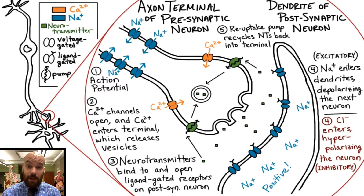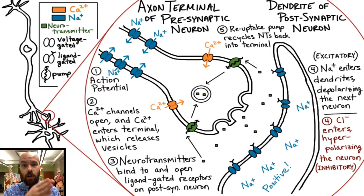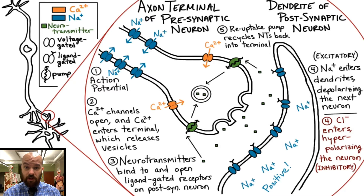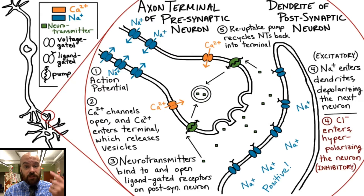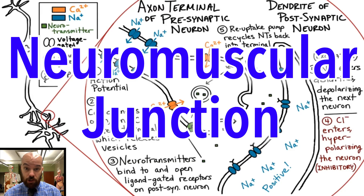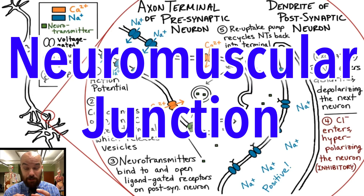Those are the steps of synaptic transmission — the communication of a signal from one neuron to the next. We looked at the example of communication between two neurons, but this could also take place between a neuron and another cell, such as a muscle cell. If it's communicating with a muscle cell — such as a signal from the brain telling your arms to move — we would call that a neuromuscular junction. It works pretty much the same way: everything we learned about a synapse between two neurons also applies to a synapse between a nerve cell and a muscle cell.